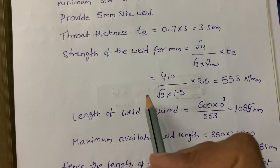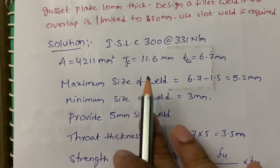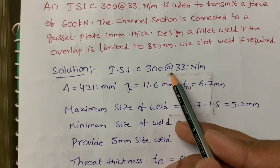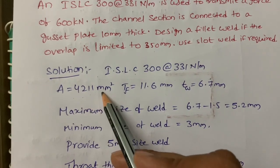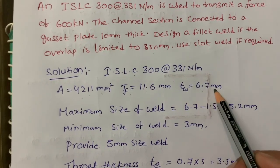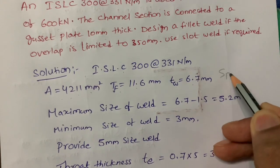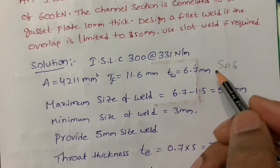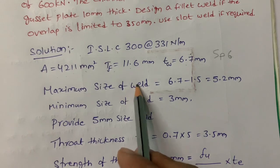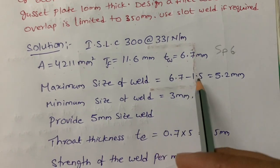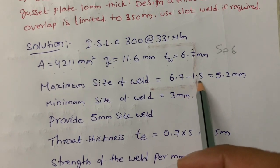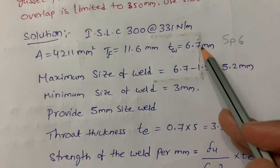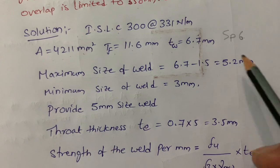We are going to provide a slot weld because our overlap length is limited to 350 mm. The channel section values from steel tables book SP6: area is 4211 mm², thickness of flange is 11.6 mm, thickness of web is 6.7 mm. Now finding maximum size of weld: thickness of web minus 1.5 = 6.7 − 1.5 = 5.2 mm. Minimum size of weld is 3 mm as per table 21 of IS 800:2007.